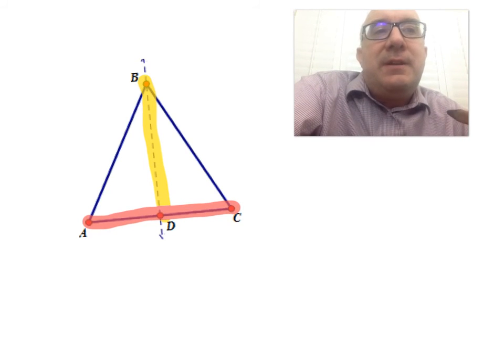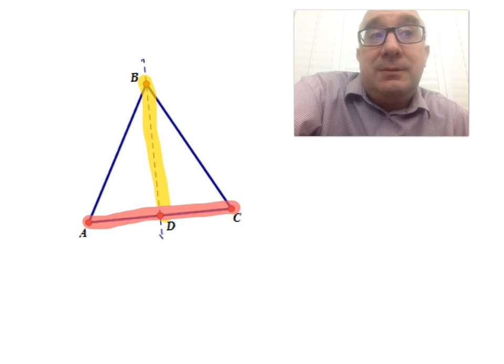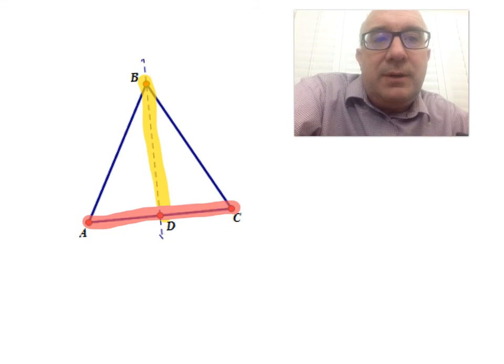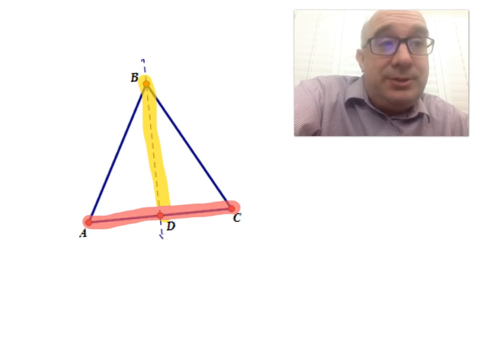So use that information. What does that mean? And it's a bisector, also giving you some more information about the diagram. Use all of that and you'll be in good shape.